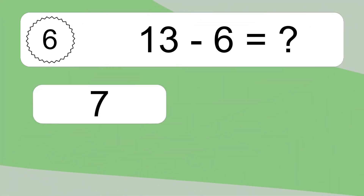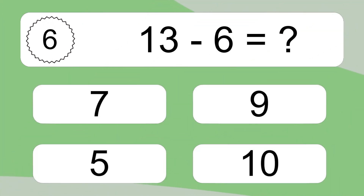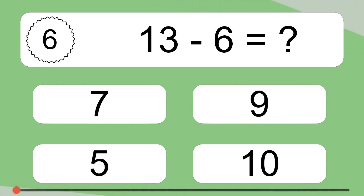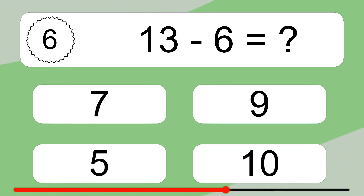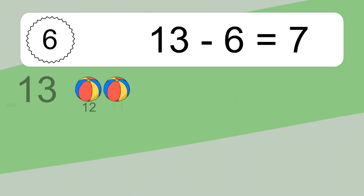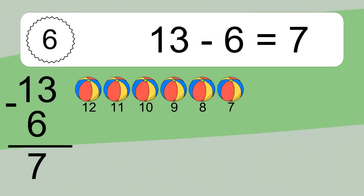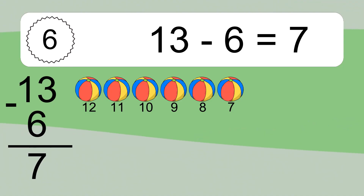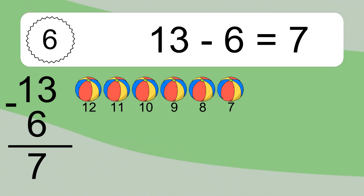13 minus 6 equals what? 13 minus 6 equals 7. Let's count it: 12, 11, 10, 9, 8, 7.